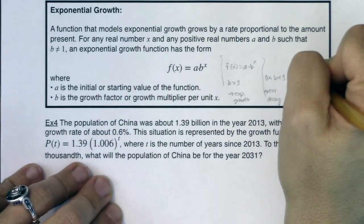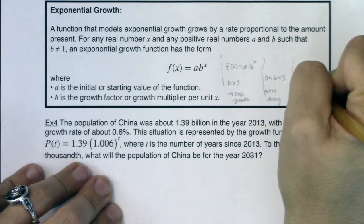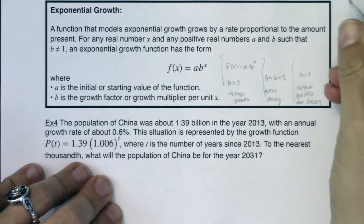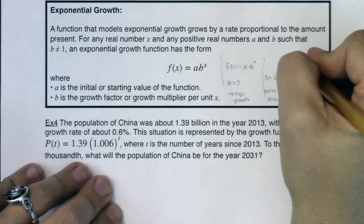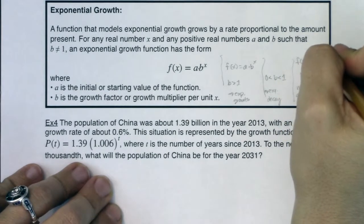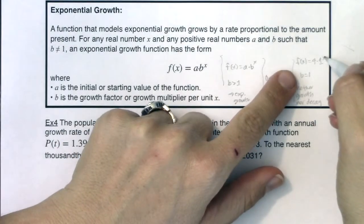And if you ever have the case where b is equal to 1, you have neither growth nor decay. And I mentioned this in example 3, but I just want to show you. If you had f of x equaling 4 times 1 to the x, if you plug 0 into this function, you would get 1 to the 0, which is 1, 4 times 1 is 4.